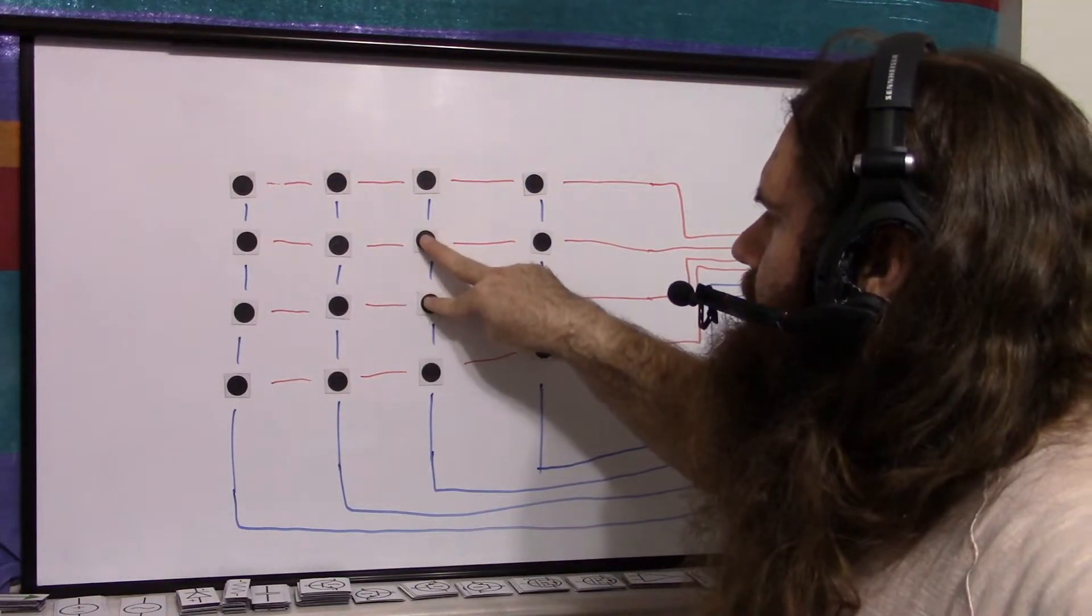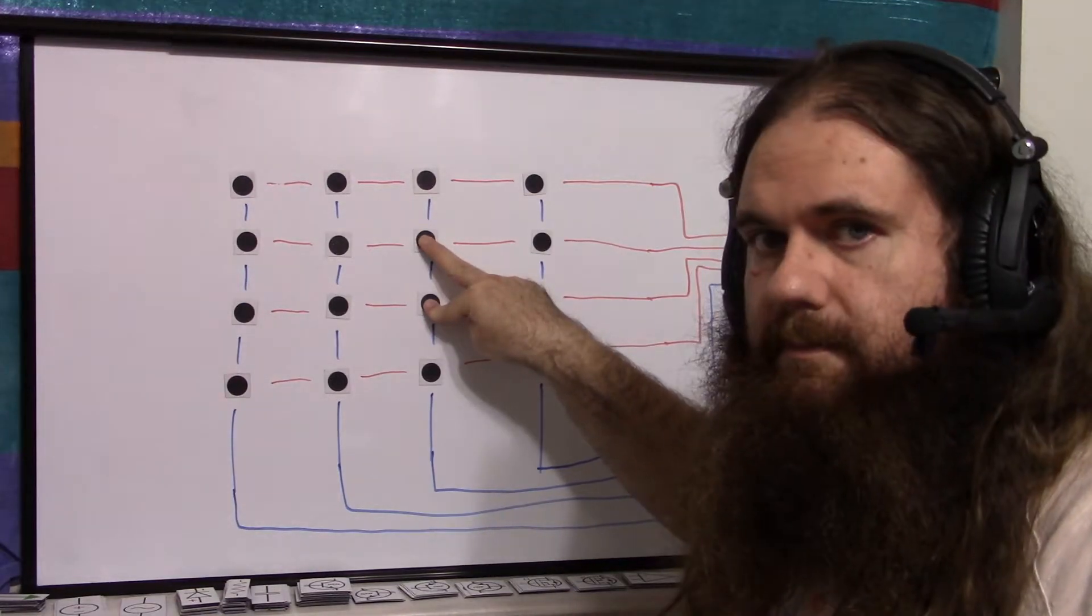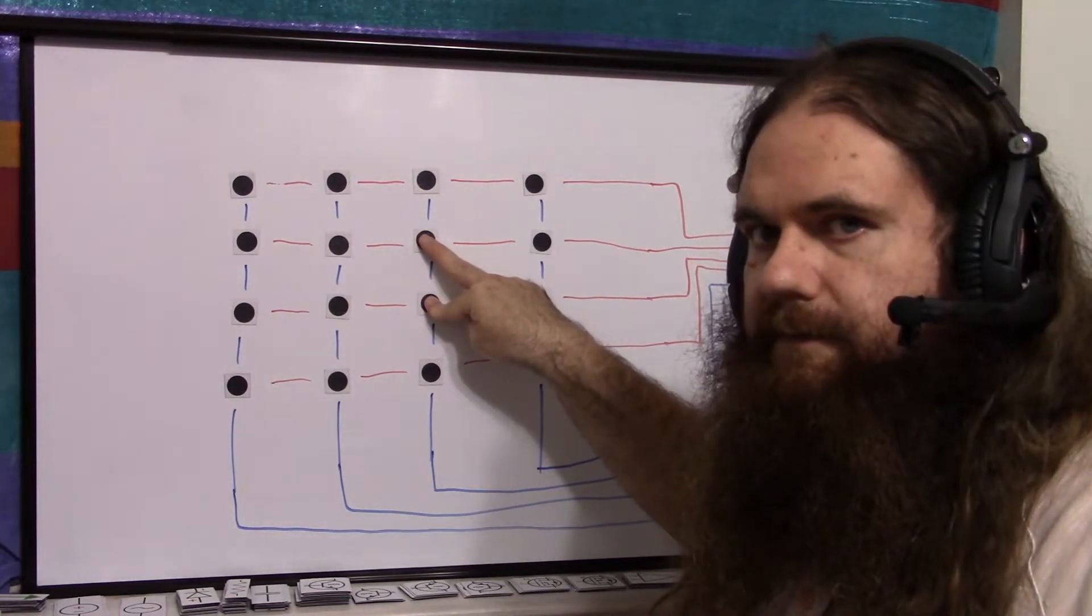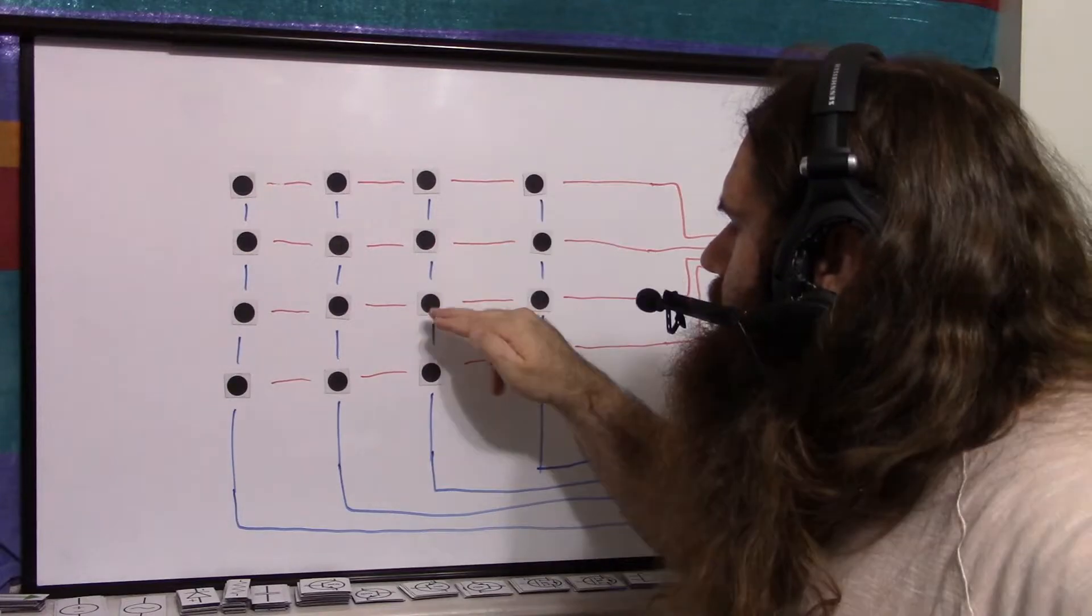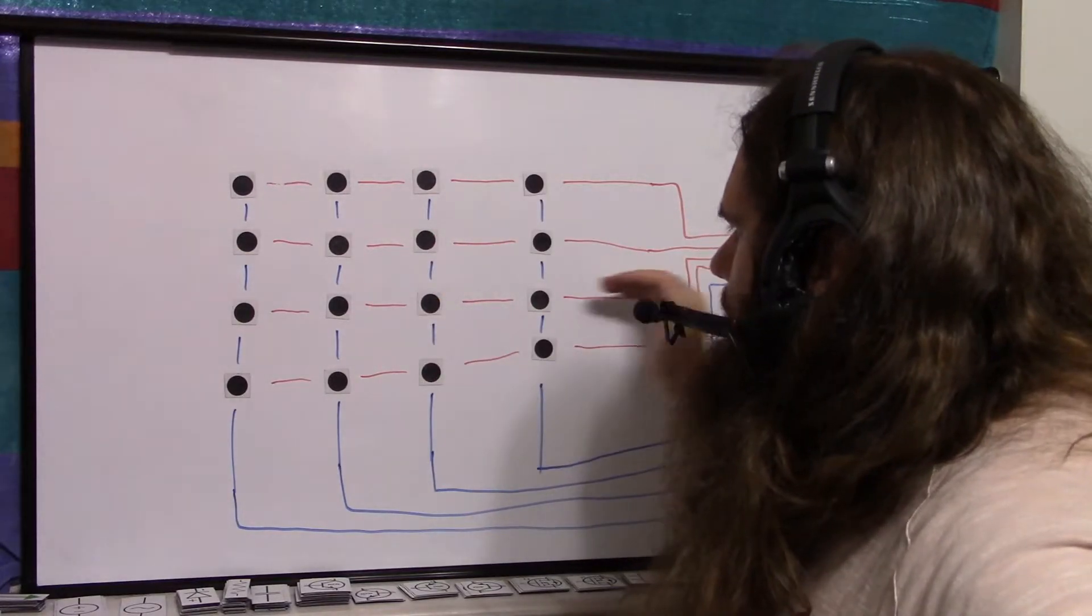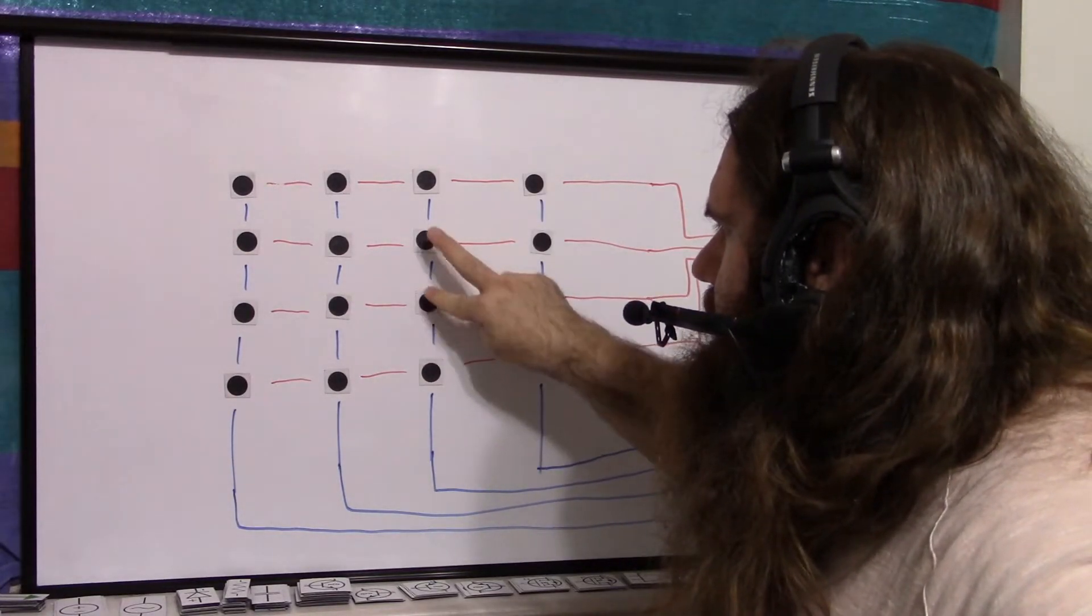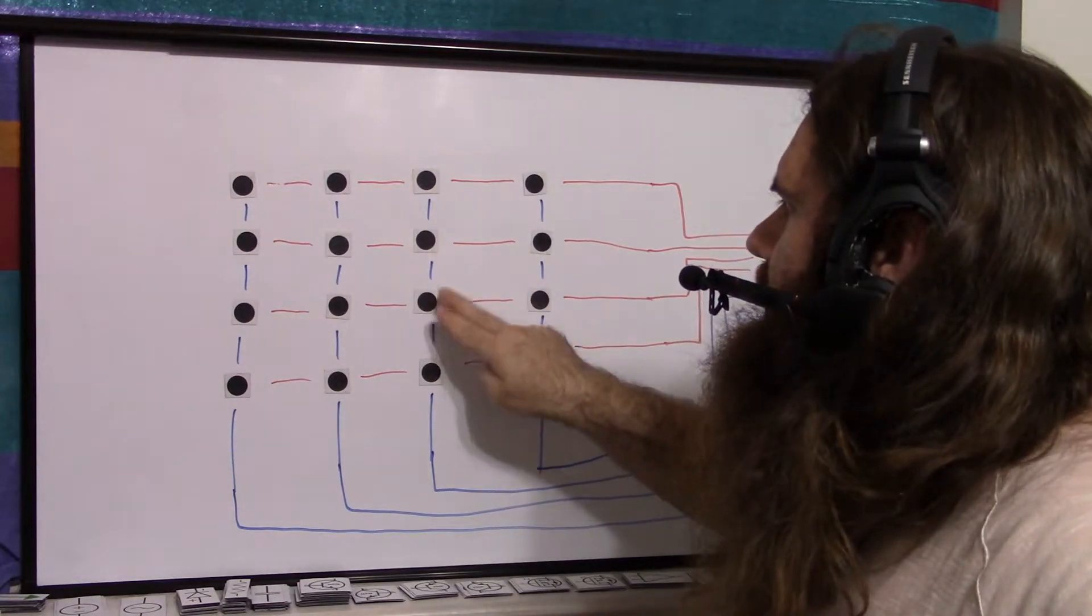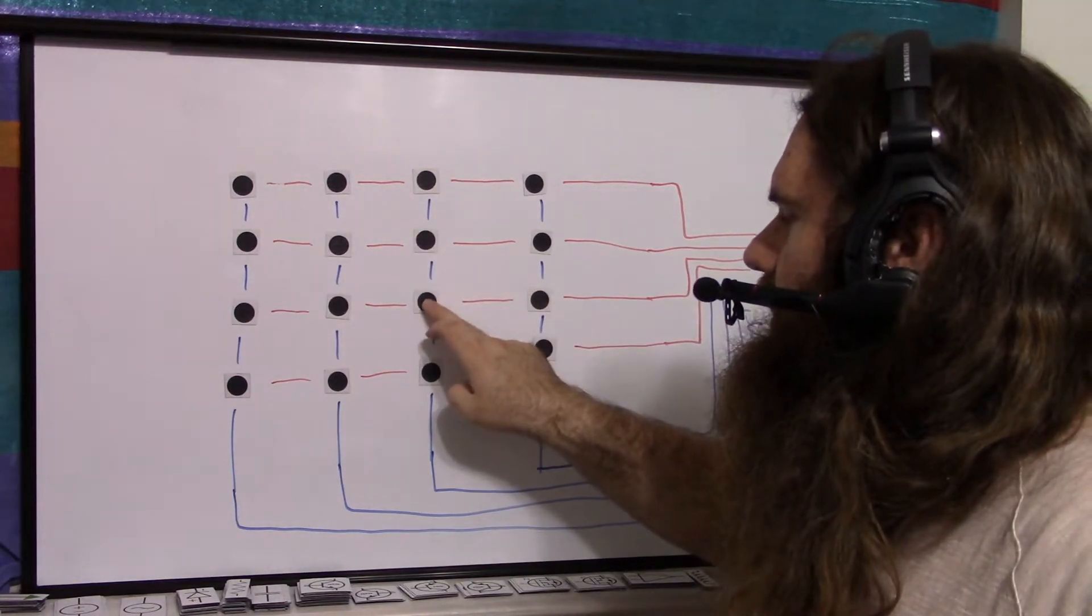And then if you have two buttons on the same column that are pressed, you can read that fine because you're only powering one row at a time. So you're powering this row, even though you're pressing both, you know this one's down. Because if only this button were down and you're powering this row, the power couldn't get to this button because this one's not pressed,